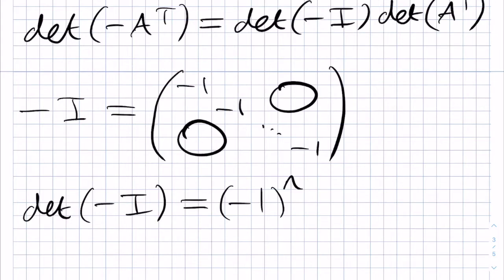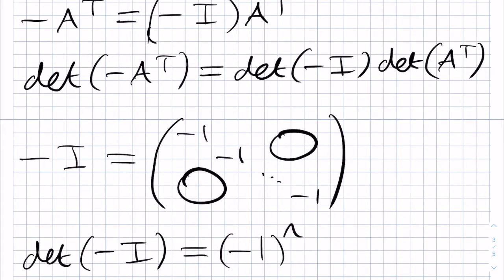We can show this inductively — you can imagine working out the determinant of minus I by doing minus 1 times the determinant of the submatrix where we remove the first column and row, which will be the n minus 1 by n minus 1 identity matrix. Going down inductively, we end up picking up n factors of minus 1. Since n is odd, minus 1 to the n is minus 1.